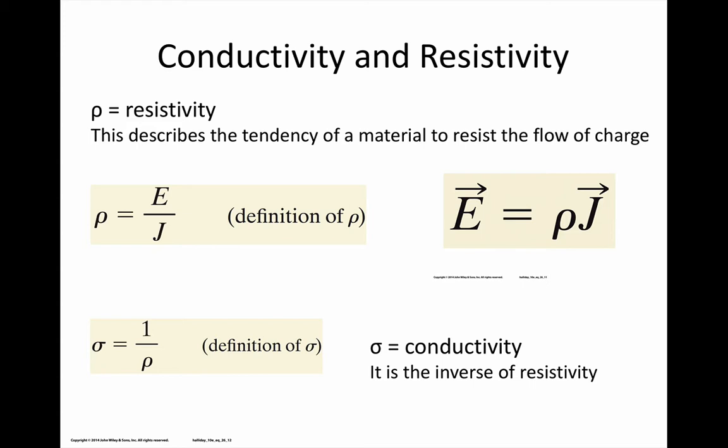The relationship is E = ρj, which means that for a given electric field, the higher the resistivity of the material, the less the current density that will be created.